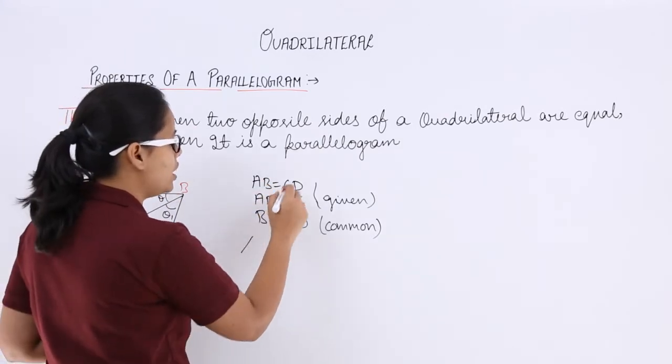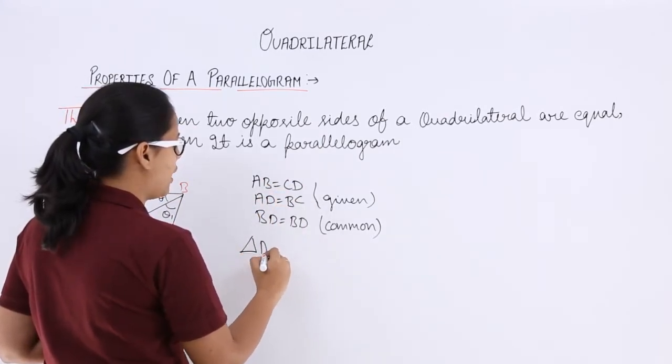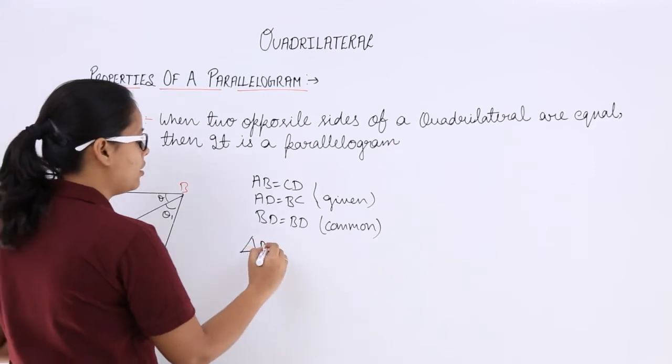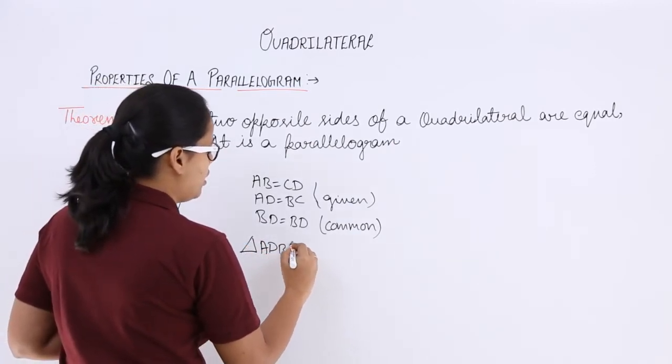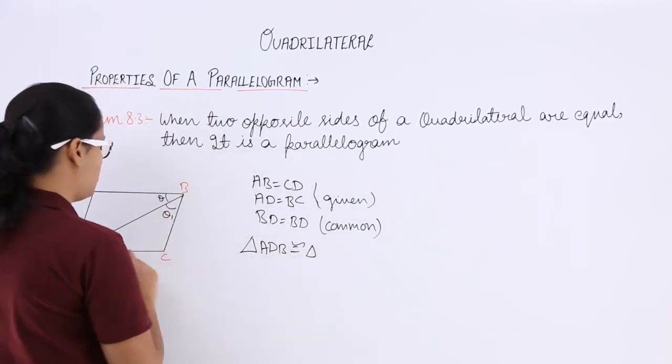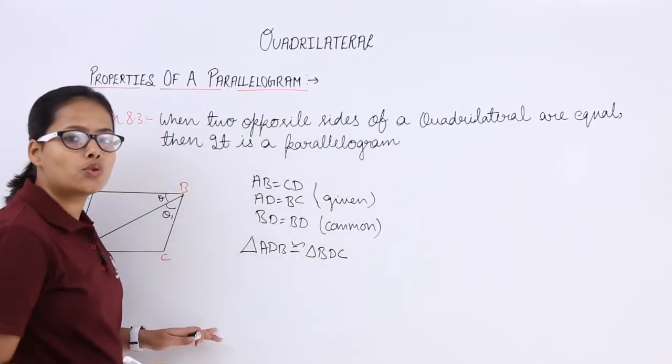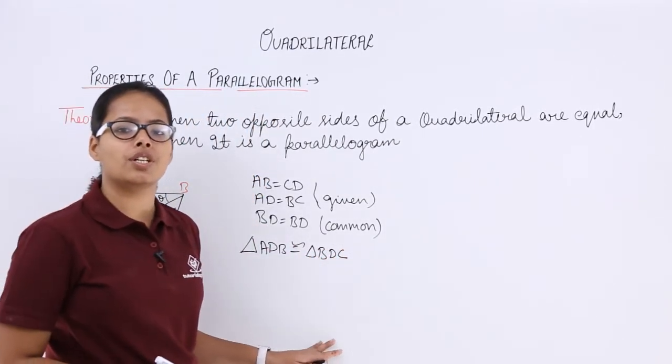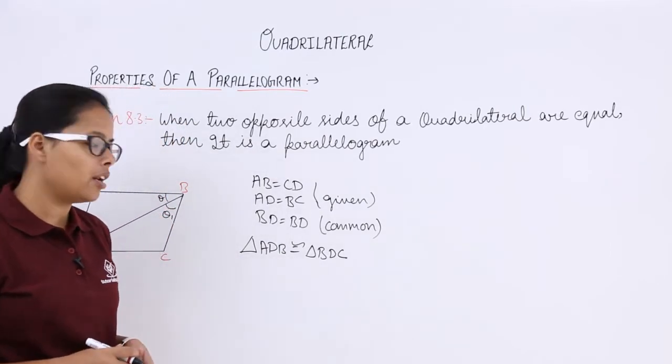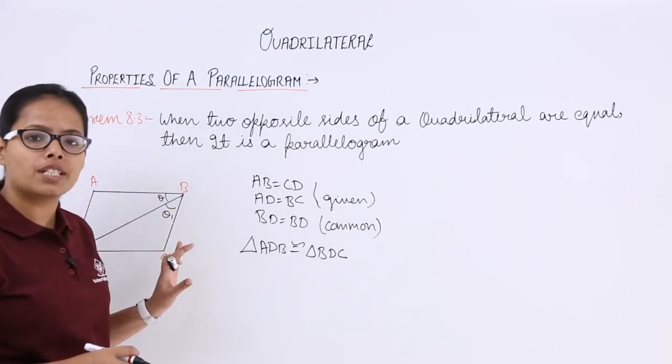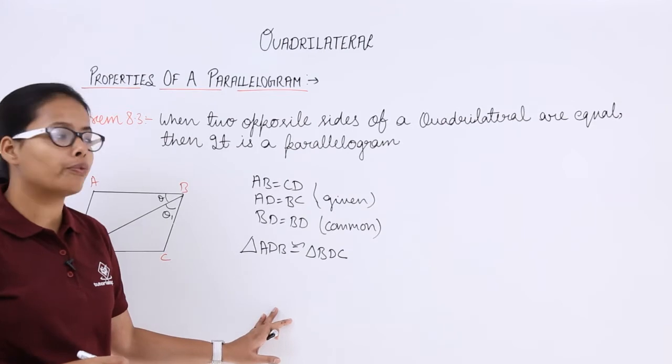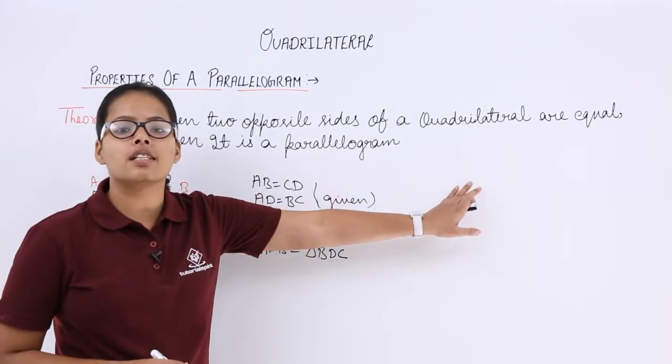So, from above these three conditions, you know that triangle ADB is congruent to triangle BDC. And when two triangles are congruent to each other, then they have to be similar. So, their angles have to be similar. That's how you will prove that this is a parallelogram.